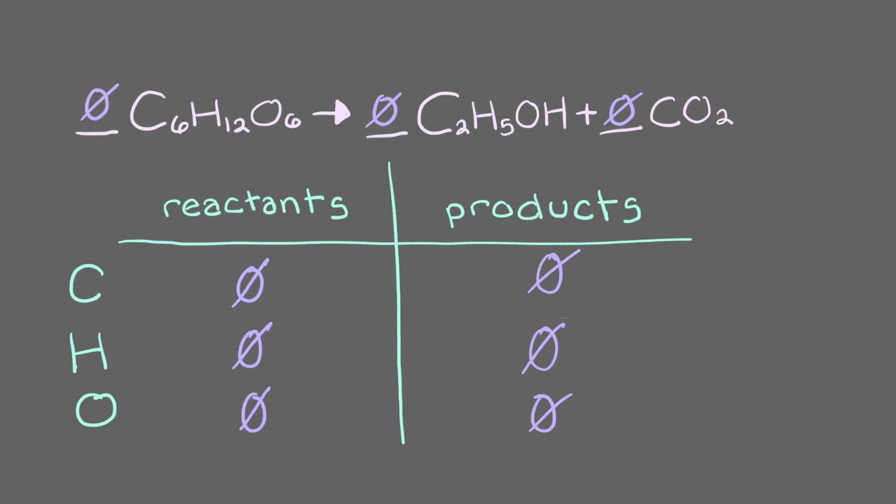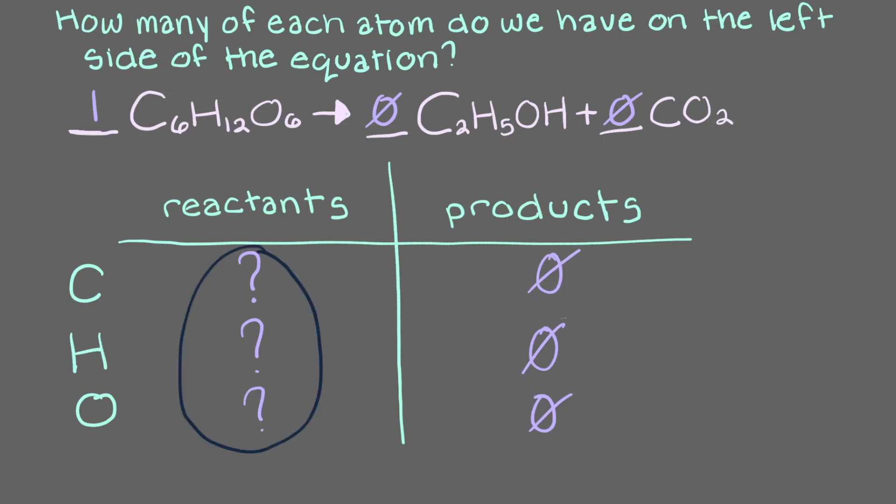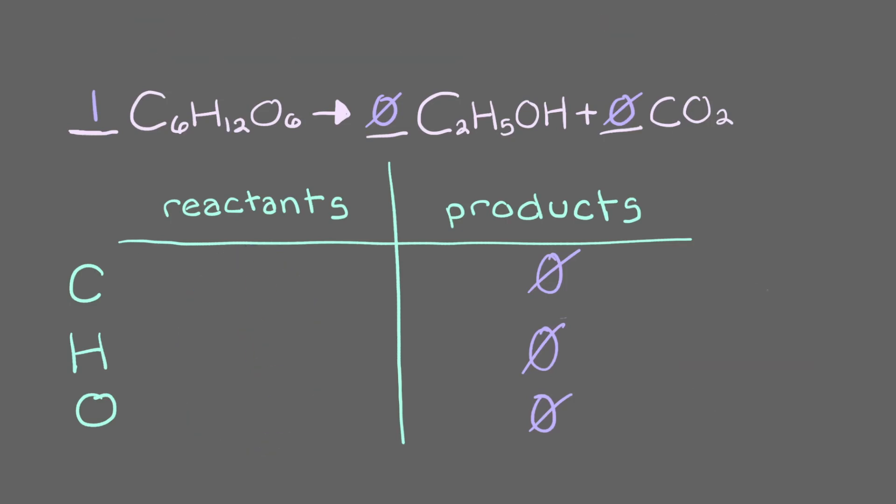Now, let's first put a coefficient of one on the reactant, glucose. You always want to start with the largest and most complex molecule to balance an equation. Once a coefficient is there, we are not going to change it. Now that this molecule has a coefficient, how many of each atom do we have on the left side of the equation? As you can see, since we put a coefficient of one in front of the glucose molecule, we have six carbon, 12 hydrogen, and six oxygen atoms on the left side of the equation.